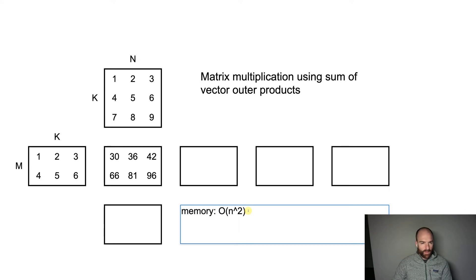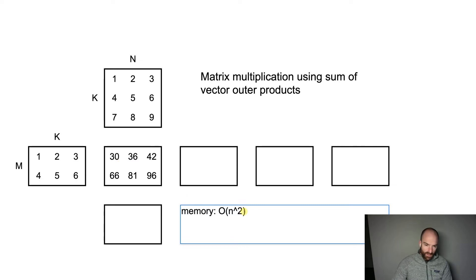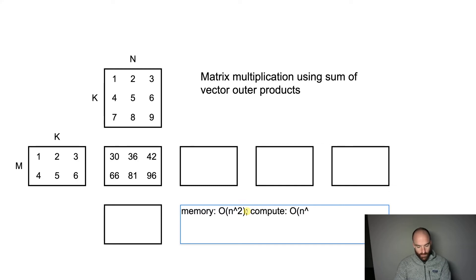In terms of compute required, we have to do a dot product of two vectors which are roughly lowercase n in size — whether it's M, N, or K they're all an array dimension. That means we have to do n operations to generate each output value, and then we have to do n-squared of those because this is a square matrix. So n times n-squared is n-cubed — the compute requirement is on the order of n-cubed.